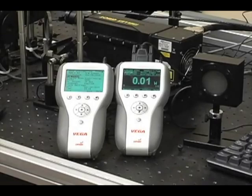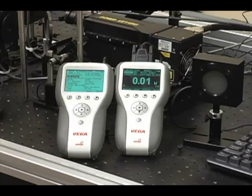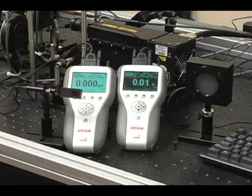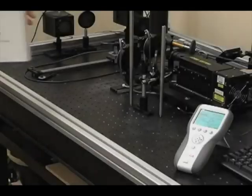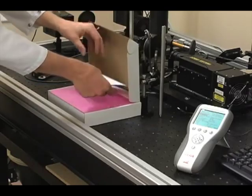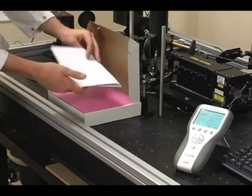When we want to measure laser power, we usually use a thermal sensor for higher powers, or a photodiode sensor for lower powers. In our first demo, we're going to show a PD300 photodiode sensor connected to a Vega meter.